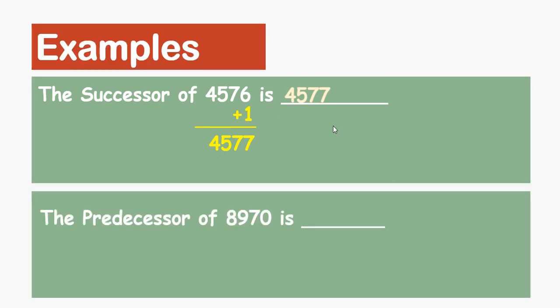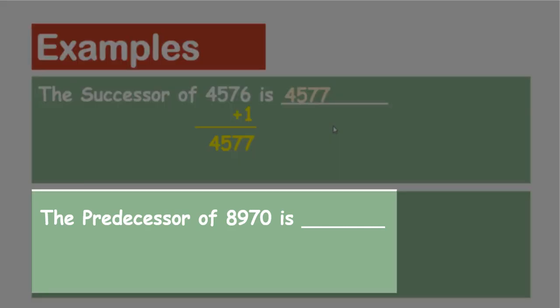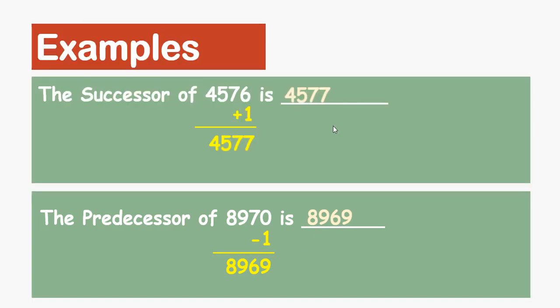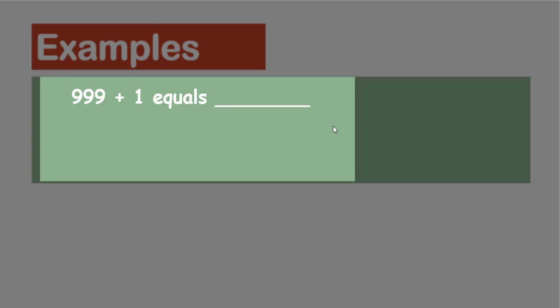The next problem: the predecessor of 8970 is dash. Here the keyword is predecessor, so we have to subtract one from 8970. We get 8969, which is the predecessor of 8970.